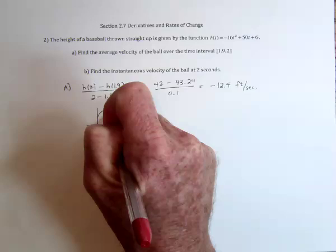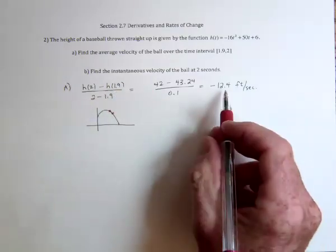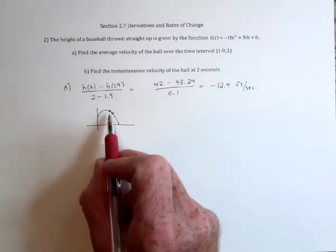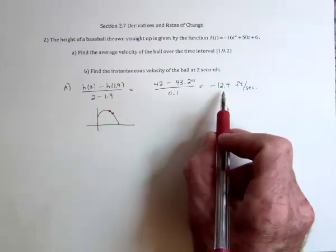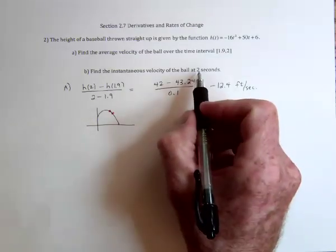And then if this were a straight line, then the velocity would be 12.4. Of course, it's not exactly a straight line, but that'll be a pretty good estimate. Now let's find the actual velocity at 2 seconds.